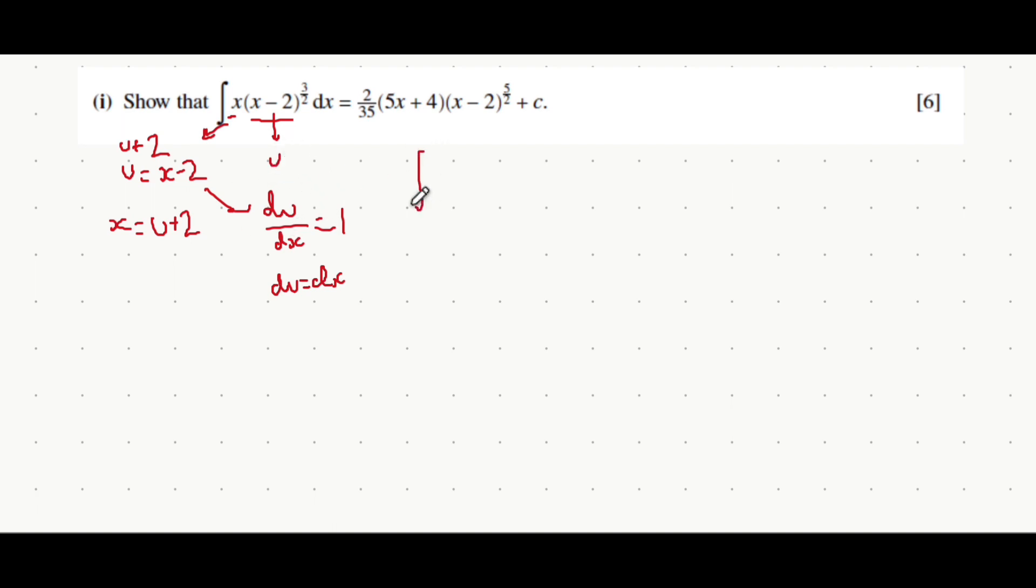Combining all of this together, what we have now is x being replaced with u plus 2, this inner bracket here being replaced with just u to the power of 3 over 2, du. Now, why did we do that?